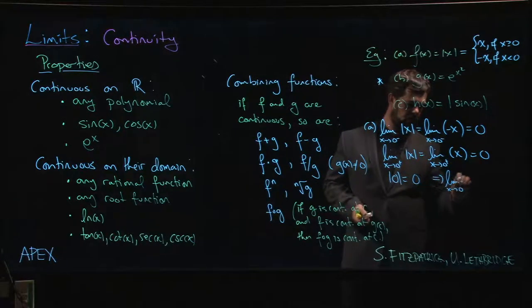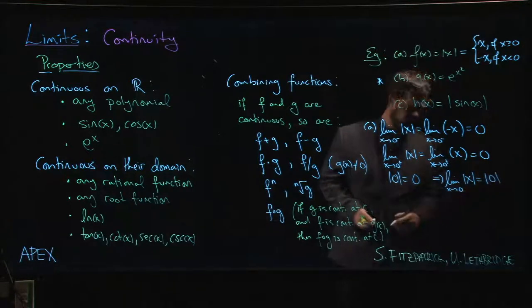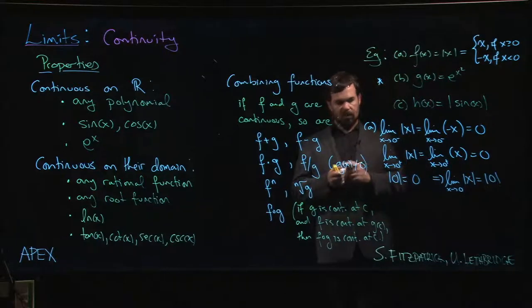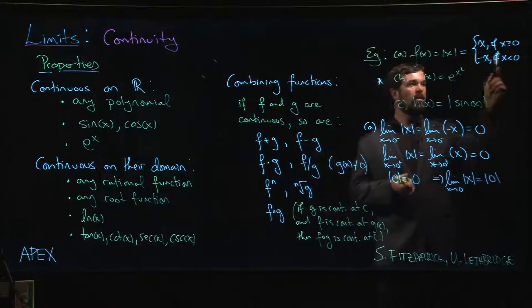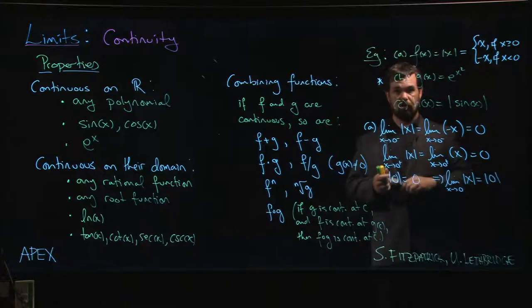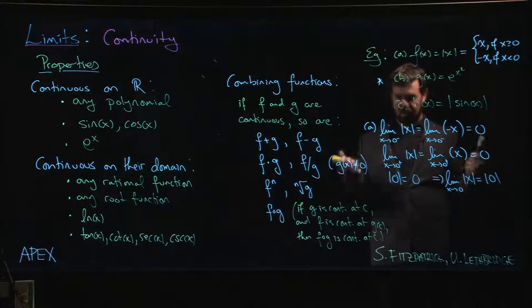So I check all of these, and all of this together tells me that the limit as x approaches zero of the absolute value of x is equal to the absolute value of zero. So now I know it's continuous at zero, I know it's continuous at negative numbers, I know it's continuous at positive numbers, so I know it's continuous everywhere.